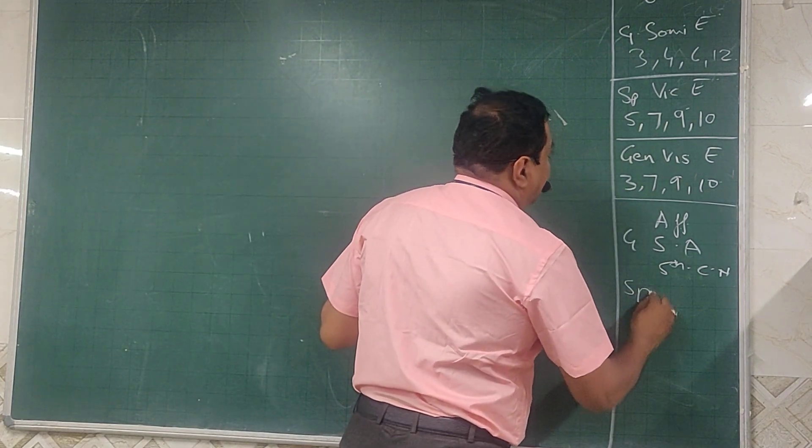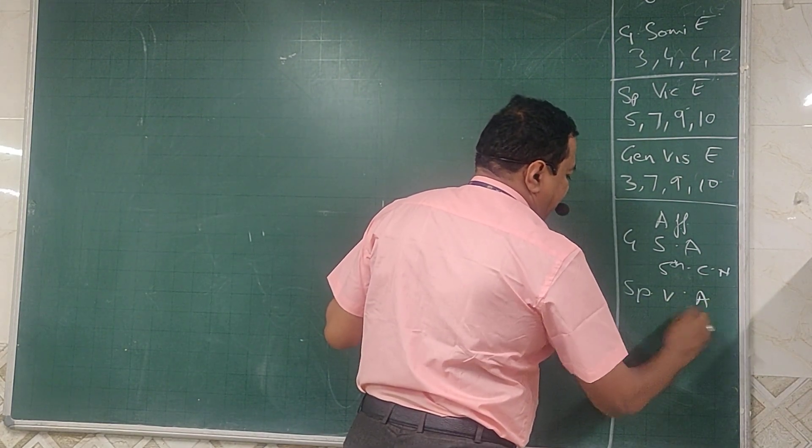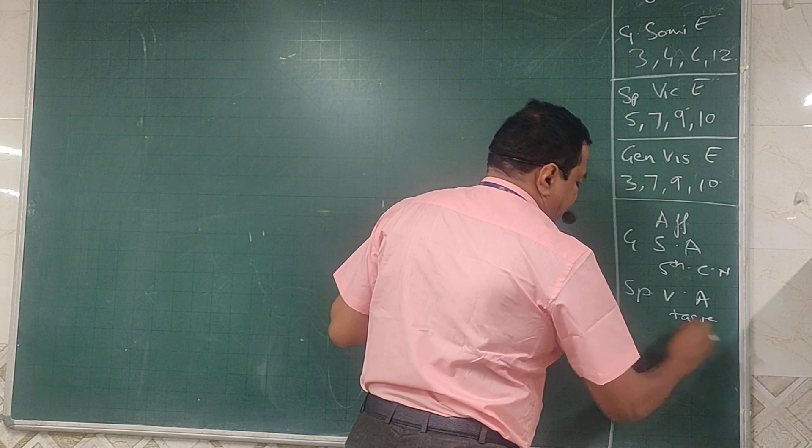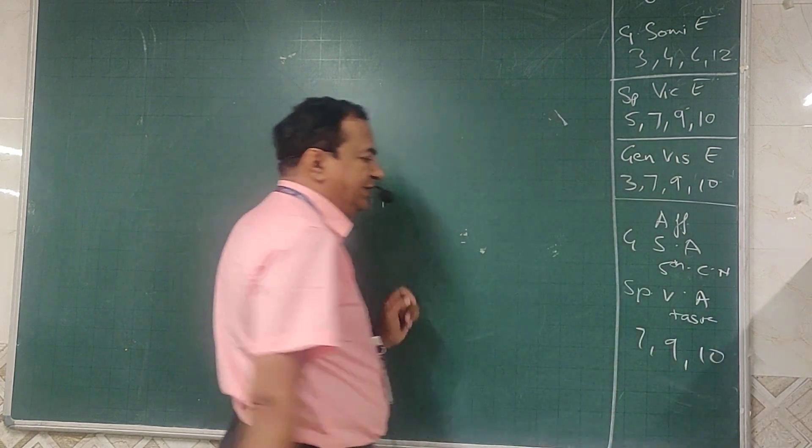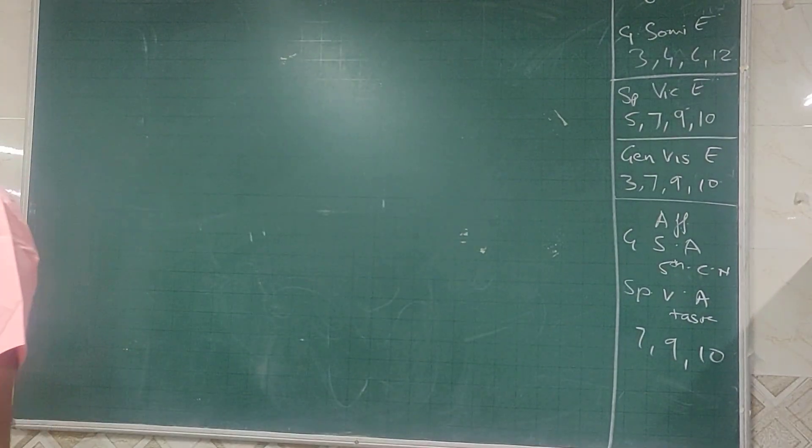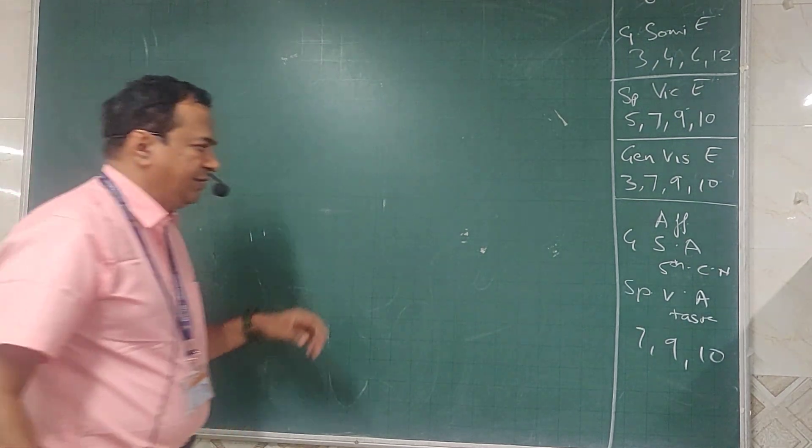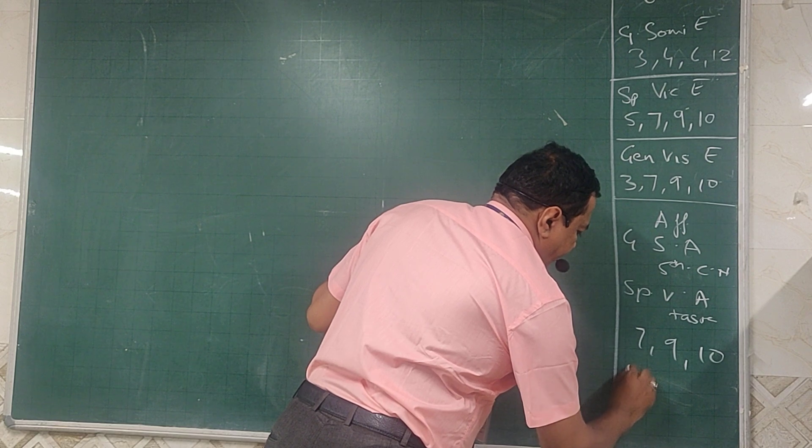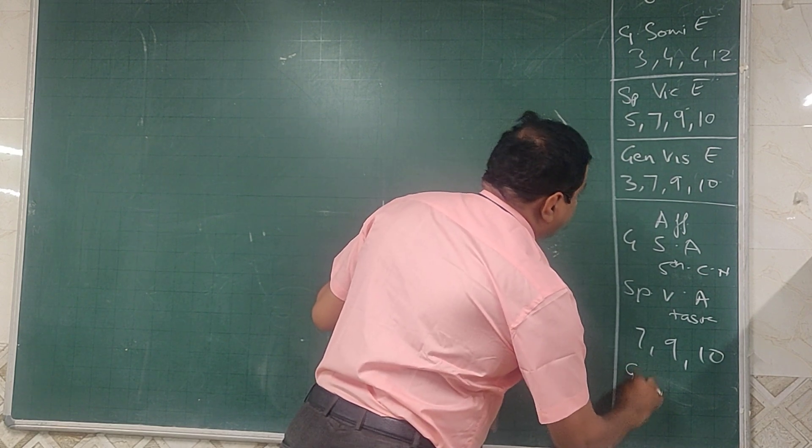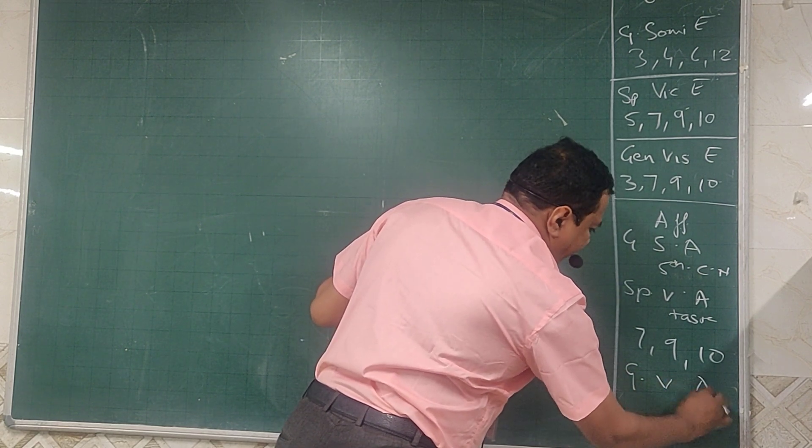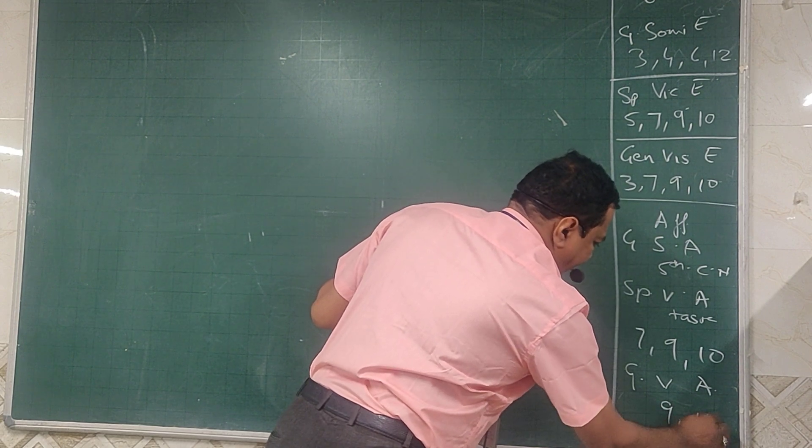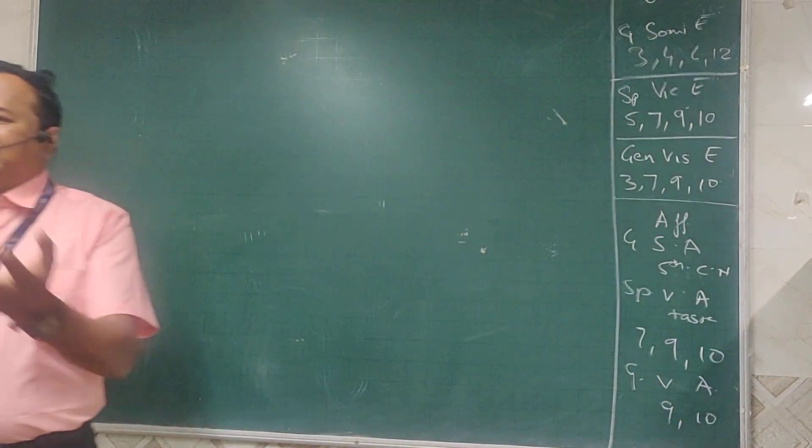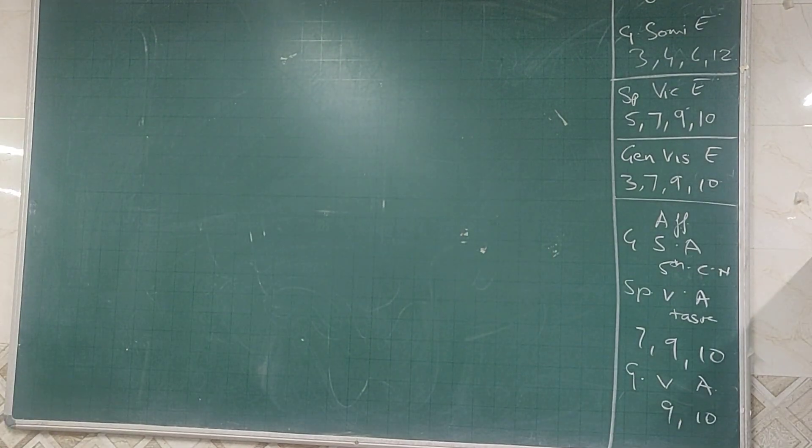Special visceral afferent, this is for taste: 7, 9, 10 supplying the tongue. And general visceral afferent, this is for 9 and 10, this is afferent from the viscera. I will be talking about this again and again.